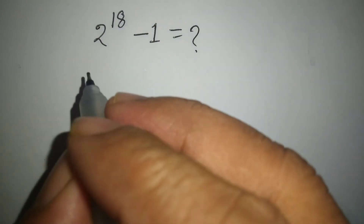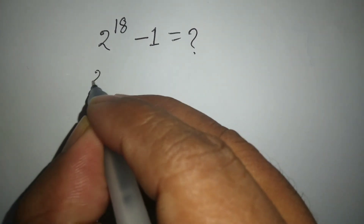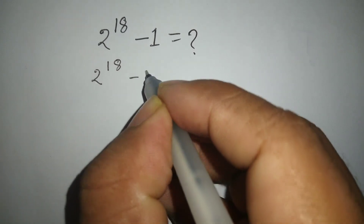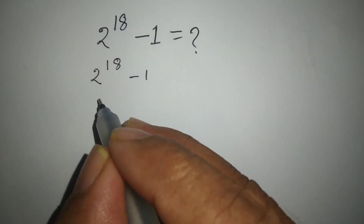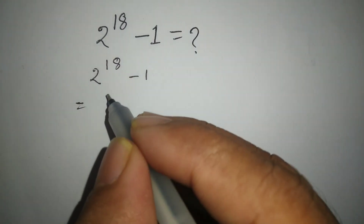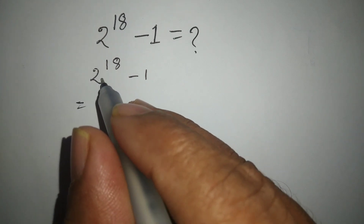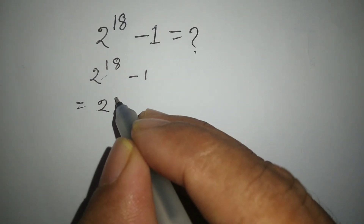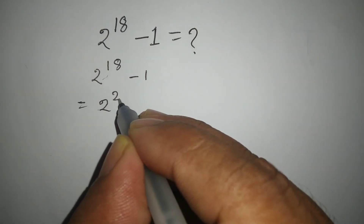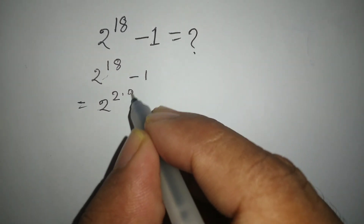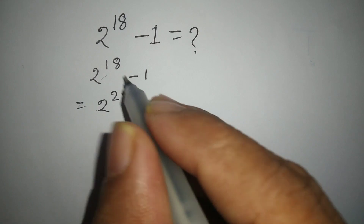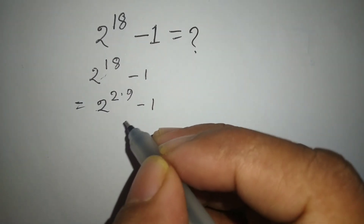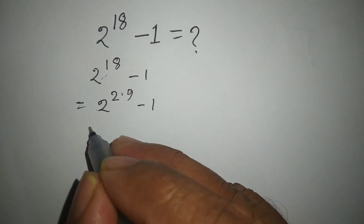At first, we can write 2 to the power 18 minus 1. We can write 2 to the power 18 as 2 to the power 2 into 9, since 2 into 9 equals 18, minus 1.